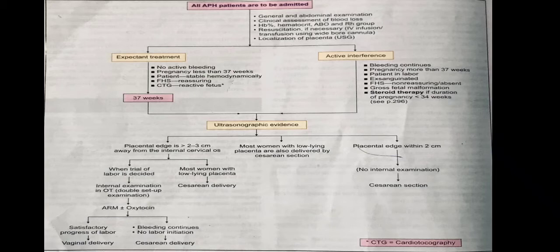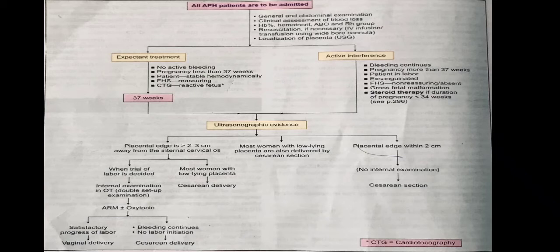All APH mothers, whether actively bleeding or with stopped bleeding, must be hospitalized. On admission, provide immediate attention and formulate a line of treatment — either expectant or active interference. Perform a general assessment and abdominal examination, clinically assess the amount of blood loss, collect blood to check hemoglobin level and hematocrit, and perform ABO and Rh grouping in case blood transfusion is needed. Start IV infusions, resuscitate the mother if necessary, and localize the placenta using USG.